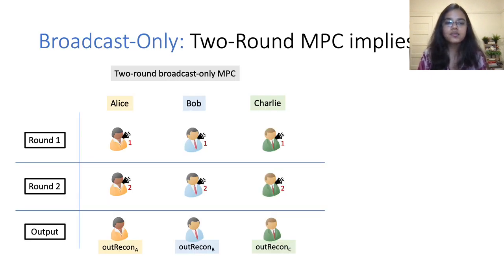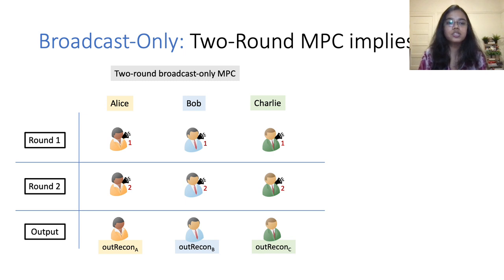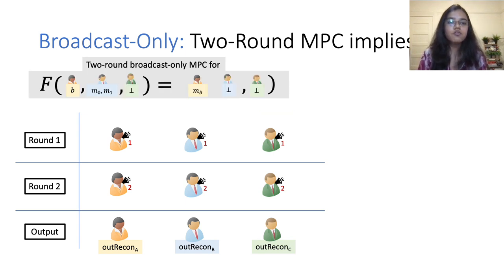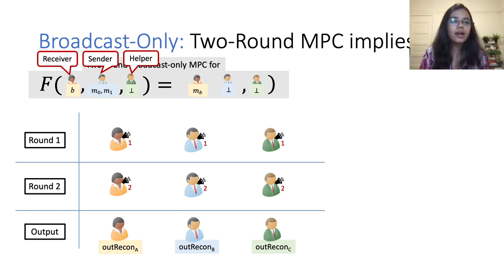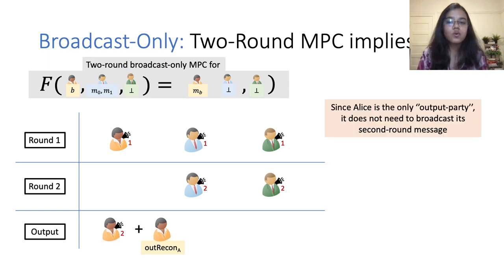We now show that two-round maliciously secure honest majority MPC in the broadcast-only setting implies a two-message oblivious transfer protocol. Consider the simplest case of three parties where one party is allowed to be corrupt; these arguments easily generalize to any number of parties. In the broadcast-only protocol, all parties broadcast a message in both rounds. Assume the function being computed is a multiparty variant of OT where Alice acts as the receiver, Bob acts as the sender, and Charlie has no input and simply acts as a helper party. At the end, only Alice gets an output. Since Alice is the only output party, she does not need to broadcast her second-round message — she can simply compute it locally during the output computation phase.